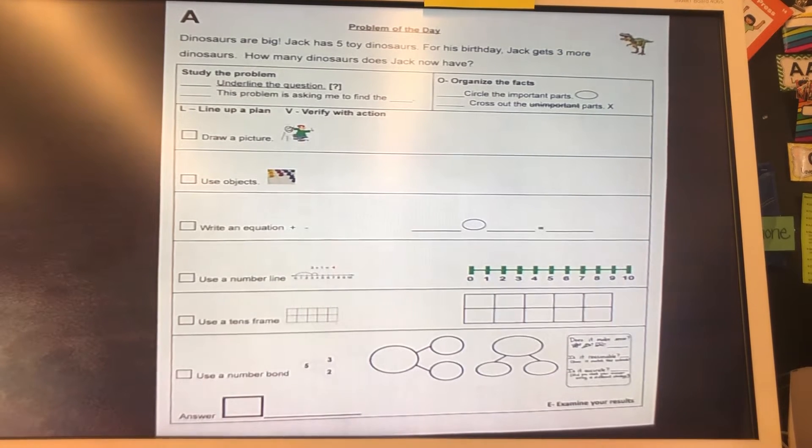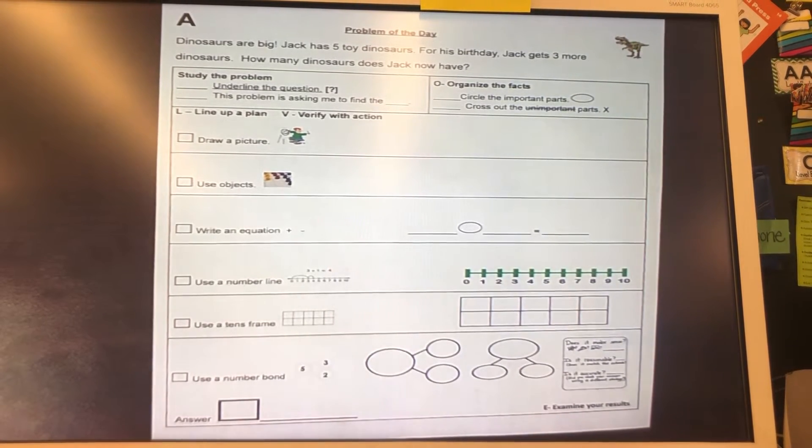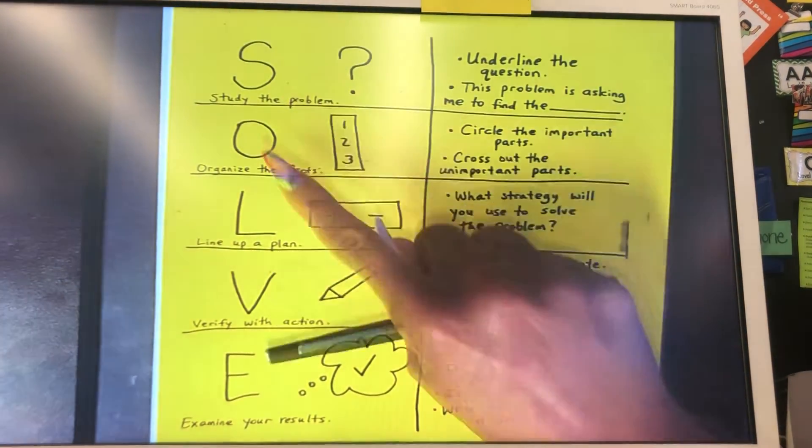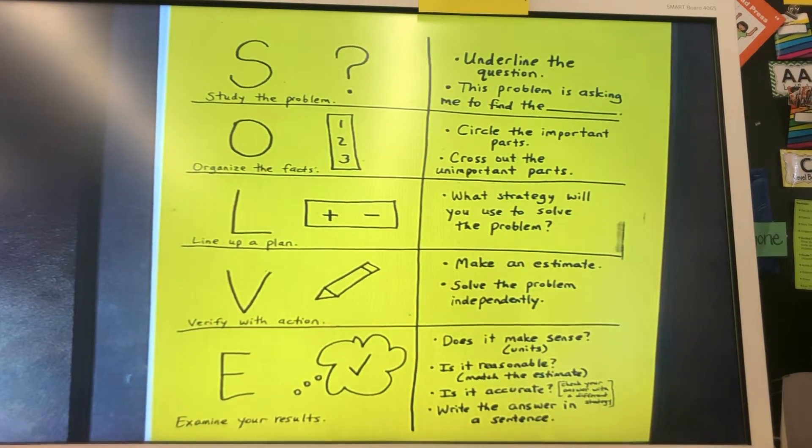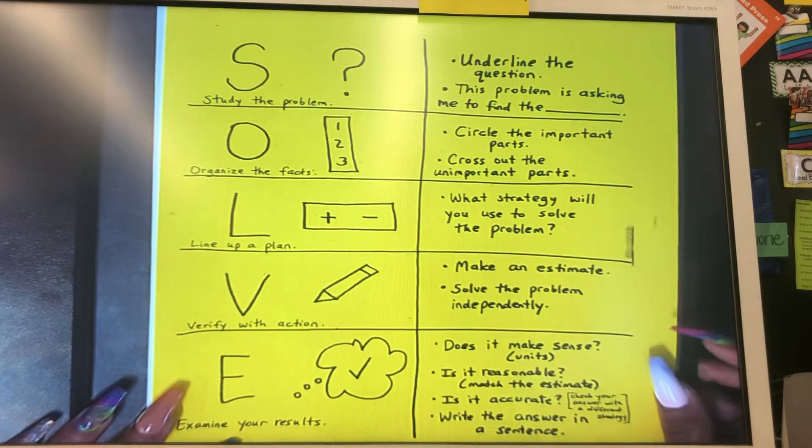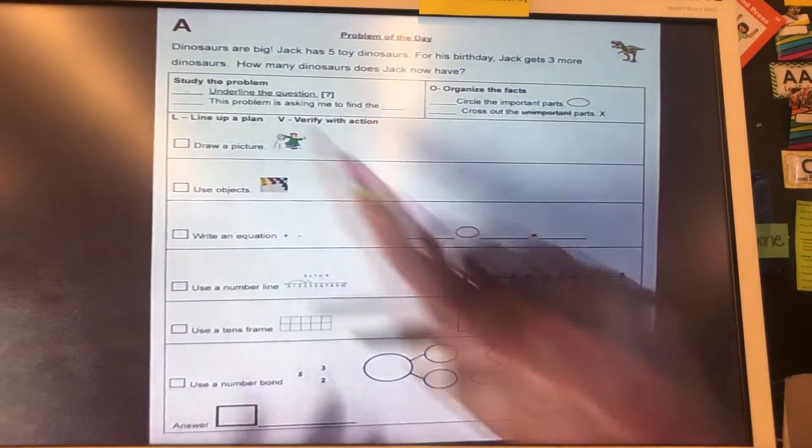Okay, so we know that when we see a word problem, we are going to go through the SOLVE method. We have S-O-L-V-E. First thing is the letter S, which says, underline the question and then think about what the problem is asking you to find.